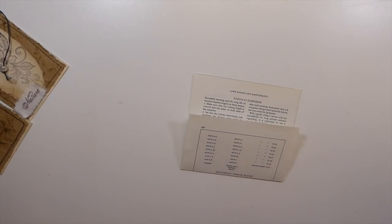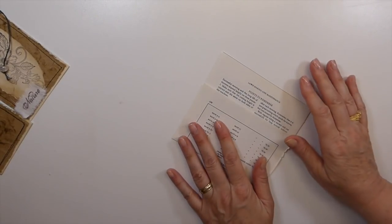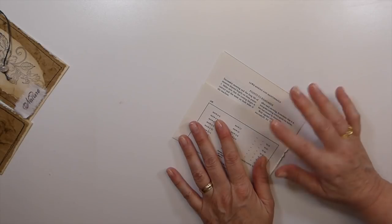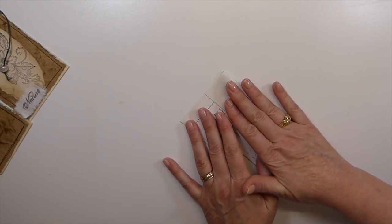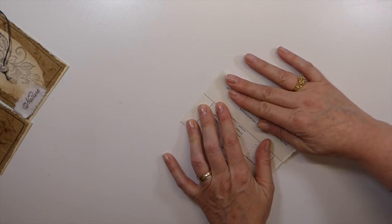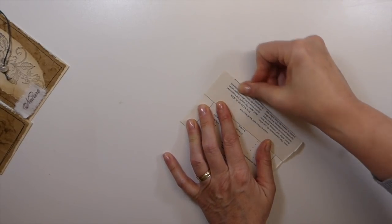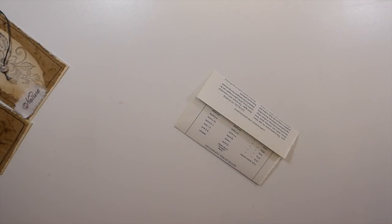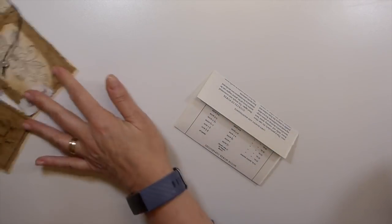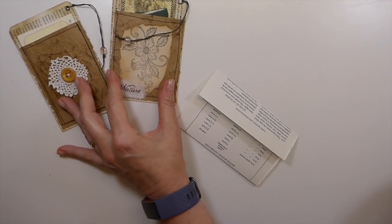Just decide on whatever size it is that you're wanting for yours. I try to keep my pockets under four inches because my journal pages tend to be around five, just to make sure that I know these are going to fit in. These can also be used as a floating pocket if you wanted to. You could just clip them in.